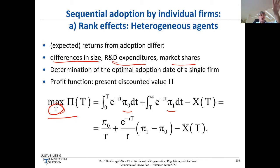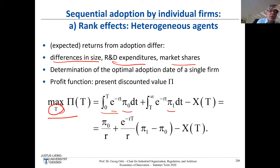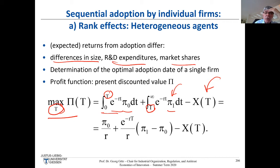From time zero up to adoption date T, you earn the profit without innovation. At time T you adopt, and from that point on you get the higher profit stream. Of course you have to pay the adoption costs that accrue at your chosen adoption date T. For example, if you adopt in 2005 for solar panels, you pay the adoption costs relevant in that year.